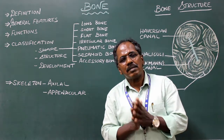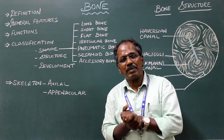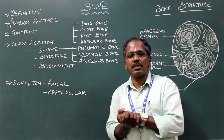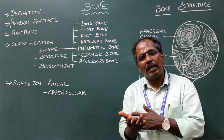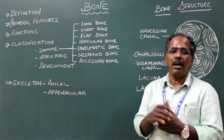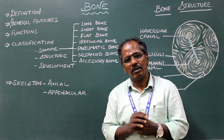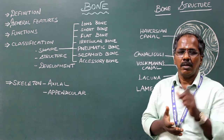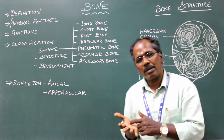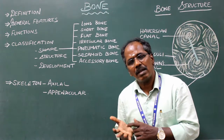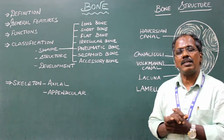Long bones consist of two ends and a shaft. They are usually present in the limbs. Examples: humerus, radius, ulna, femur, tibia and fibula. Short long bones — examples: metacarpals and metatarsal bones, including phalanges.